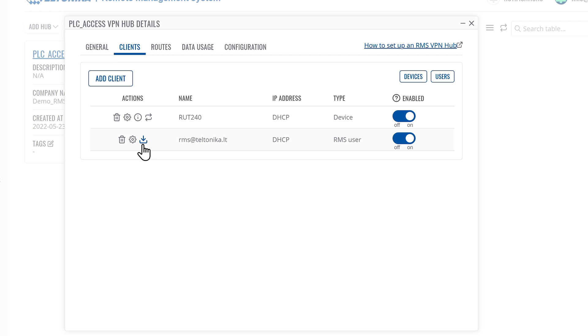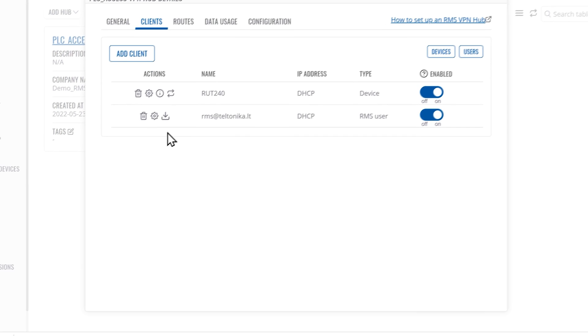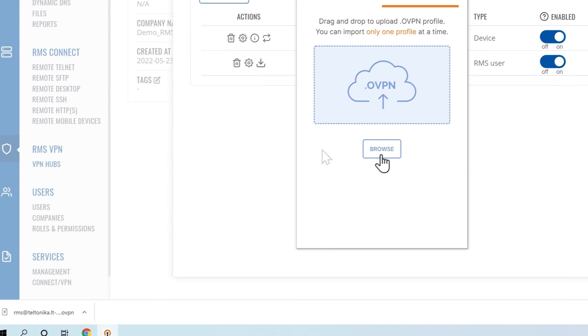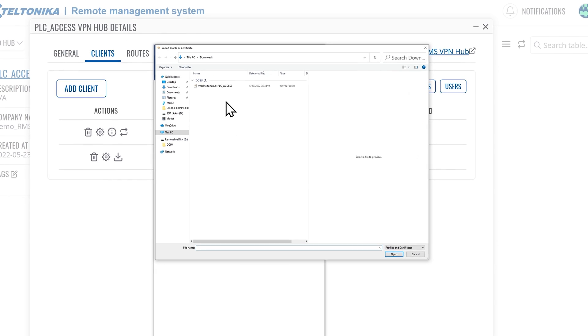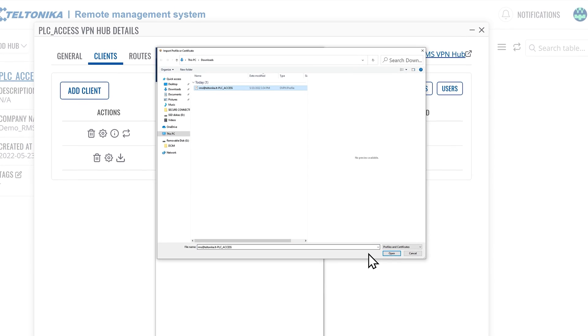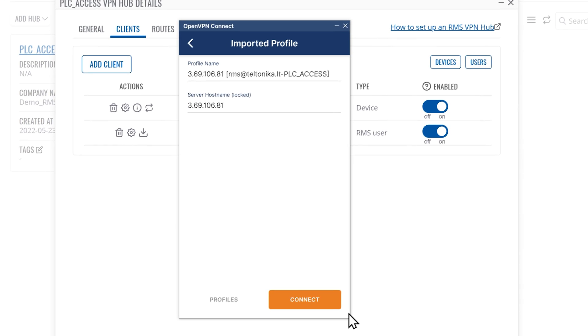In the Actions column, click the Download icon. Locate your OpenVPN configuration file. Open OpenVPN Connect software and import this OpenVPN file. Click Connect.